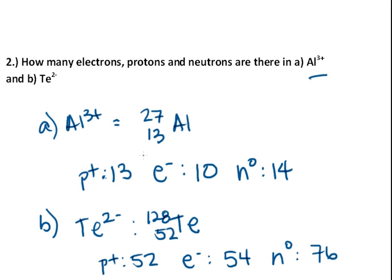And so that's using atomic masses and numbers to find the number of electrons, protons, and neutrons in atoms and atomic ions.